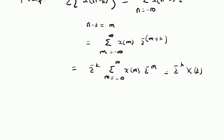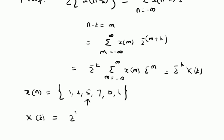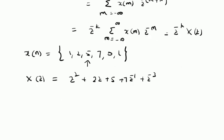Let us look at an example illustrating the application of this property. Consider a signal X of n with the sequence 1, 2, 5, 7, 0, 1, 7, 0, 1, where the value at n equal to 0 is 5. So 2 is at n equal to minus 1 and 1 is at n equal to minus 2. By definition, X of z will be 1 times Z squared plus 2Z plus 5 plus 7 times Z power minus 1 plus 0 plus 1 times Z power minus 3 and Z power minus 5. This is the Z-transform X of z for the given signal.